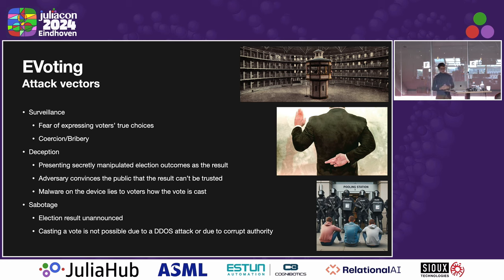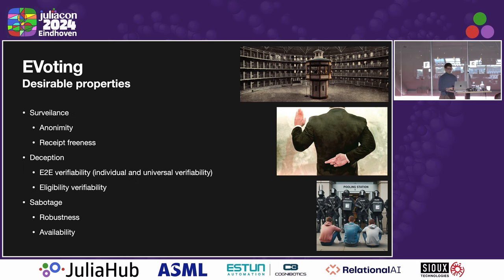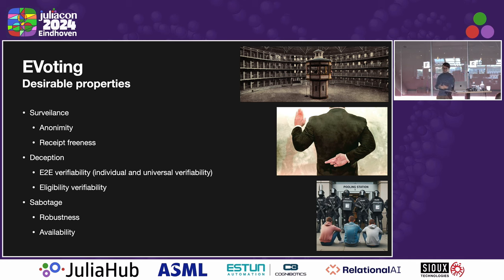Since these threats are understood in the literature, there are certain properties which e-voting systems need to have. To combat surveillance, we need two properties. The first is anonymity of the votes — published votes cannot be linked to individual voters. We also need receipt-freeness, which means that voters cannot prove to a third party how they cast their vote, and this eliminates coercion and bribery.